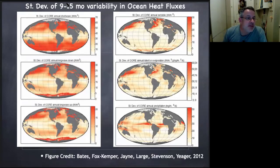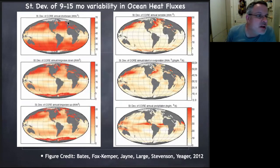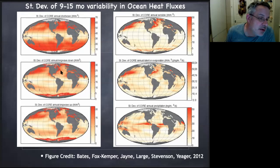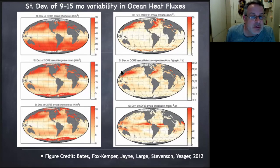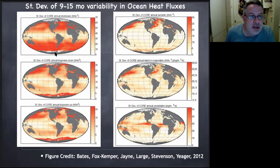Here's the standard deviation of 9-to-15-month variability in ocean heat fluxes — basically a map of where the variability is in the annual fluxes. The top is in shortwave radiation — this is the sun changing. The longwave outgoing radiation also changes because the response of ocean and atmospheric temperatures is not exactly in phase with the solar temperature. Sensible heat, evaporation, precipitation, and latent heat fluxes are also rather different compared to incoming solar. This is a very complicated pattern of variability in the seasonal cycles.